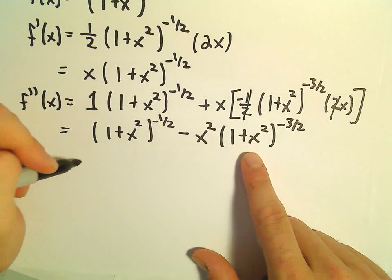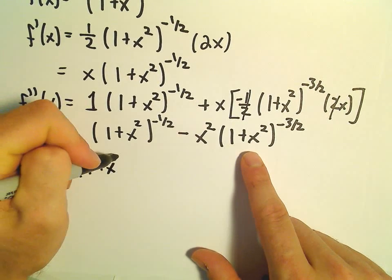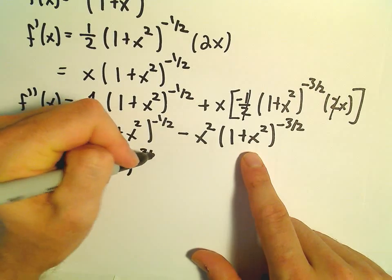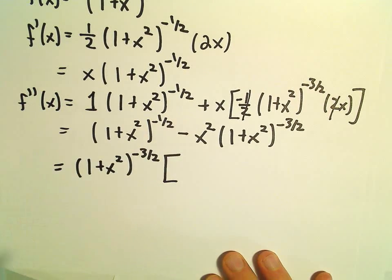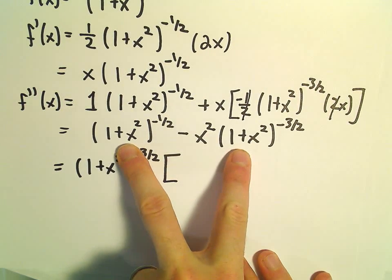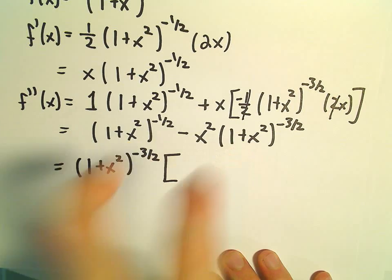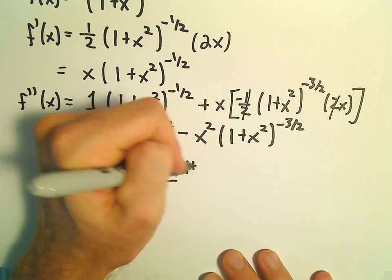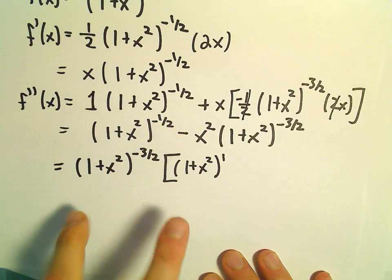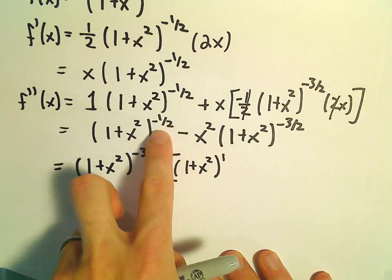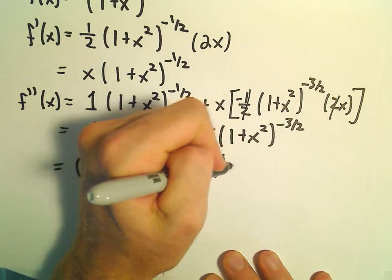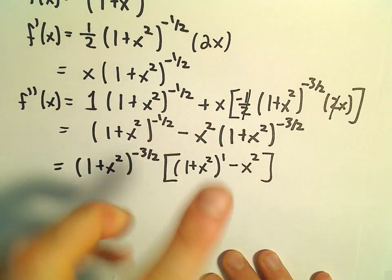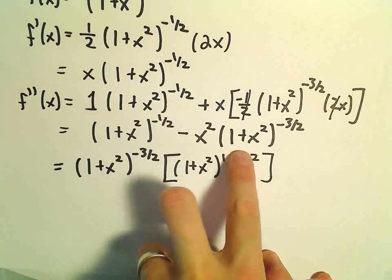I'm going to factor this. I'm going to pull out the 1 plus x squared to the negative 3 halves power. Pulling out the smaller of the two exponents on the 1 plus x squareds. Well, if we multiply that by 1 plus x squared to the first, when we distribute, we'll add the exponents, and that will give us our first term back. And then we'll just need a minus x squared when we distribute to get our second term back.